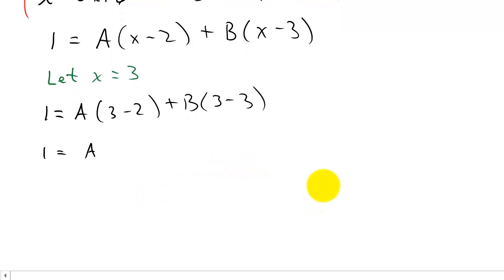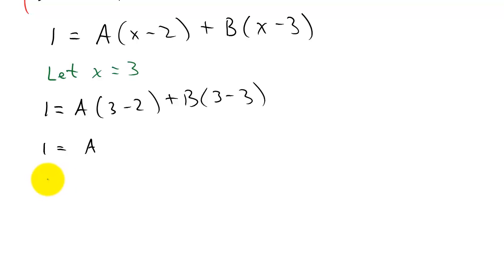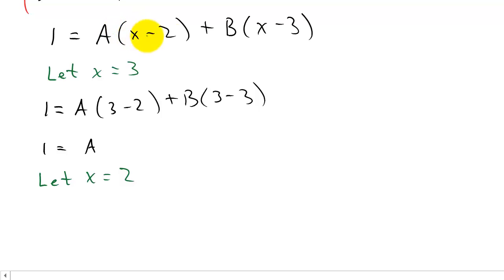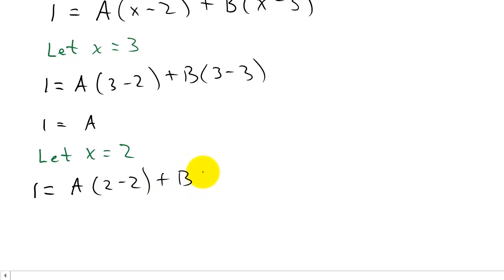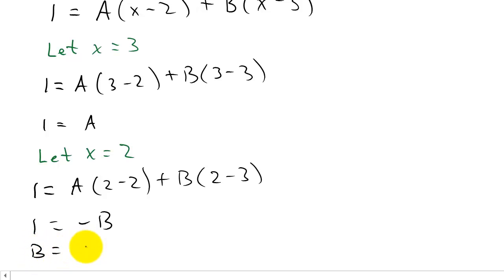Now I'll let x = 2, which makes the (x − 2) term go to zero so I can solve for B. Plugging in: 1 = A times (2 − 2) + B times (2 − 3). The first term goes to zero, and 2 − 3 = −1, so I get 1 = −B, which means B = −1.